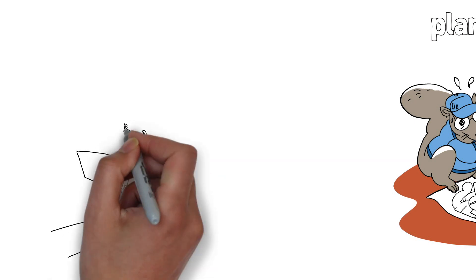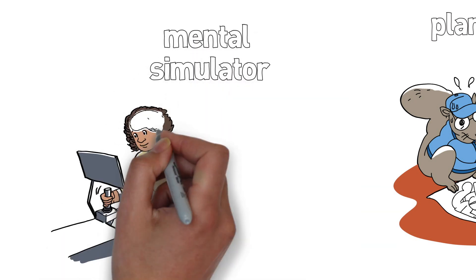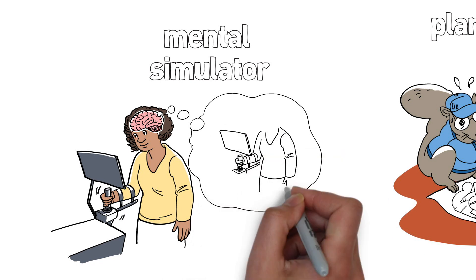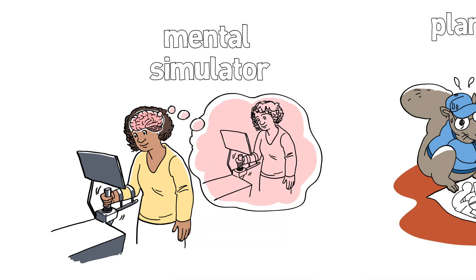But in our lab we have shown that people can use a mental simulator in their brain to predict how their body will respond to commands from the brain so that errors can be anticipated and corrected.